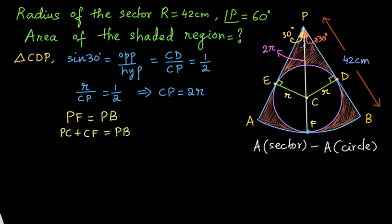But what is PF? From the figure PF is nothing but PC plus CF. This is equal to PB. Now what is CF? CF also is a radius of the circle. So we can substitute PC as 2r plus CF as r is equal to PB. PB is the radius of the sector, which is 42. Now we can calculate the radius here. 2r plus r is 3r. 3r is equal to 42. So the radius of the circle will be 42 by 3. That is equal to 14 cm.